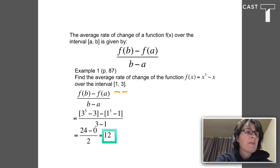f(3) equals 3³ - 3, using our formula x³ - x. Then I subtract f(1), which is 1³ - 1.